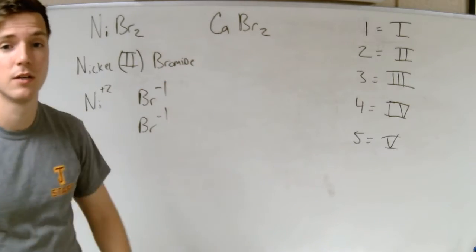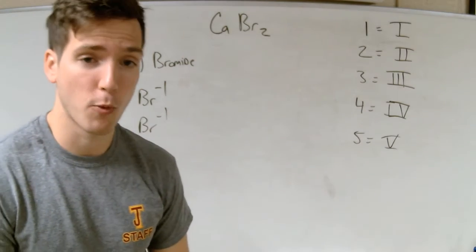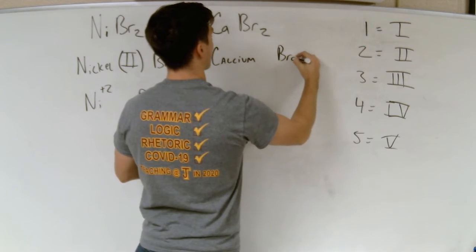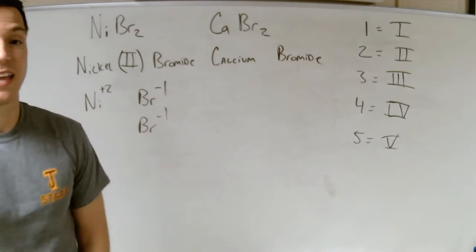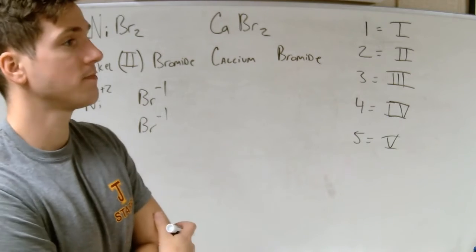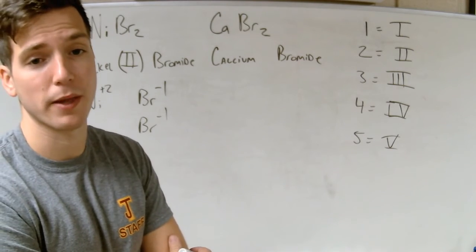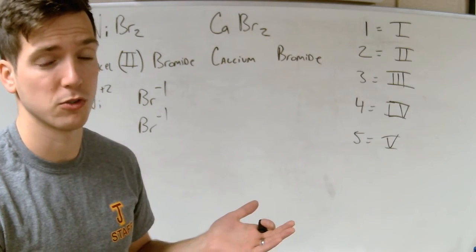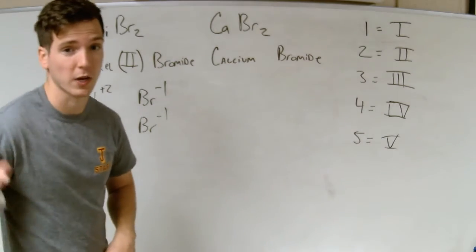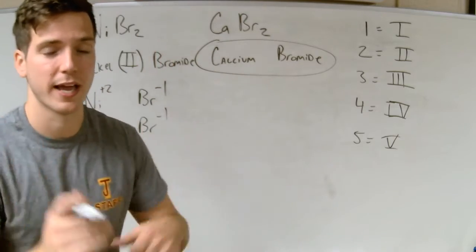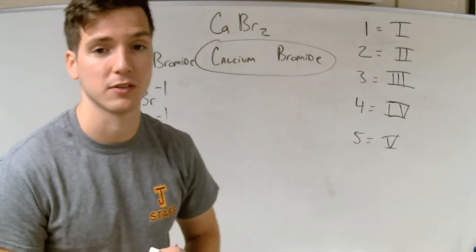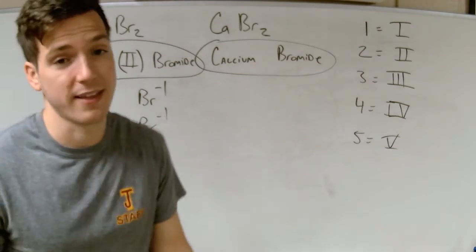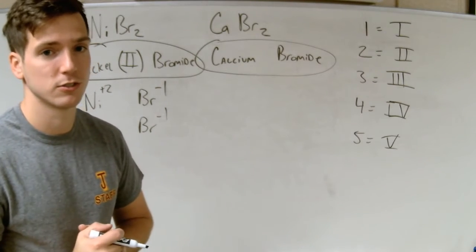Now I look at calcium bromide. I write calcium, then bromide. Does calcium need a Roman numeral? No — calcium is not a transition metal. It always has a charge of plus 2. So there's no reason to put Roman numeral II in there. If you put a Roman numeral in there, that's wrong. Calcium already has a fixed charge of plus 2 — it's in the alkaline earth metals. Nickel(II) bromide needs that Roman numeral because nickel has a varying charge, not a fixed one.